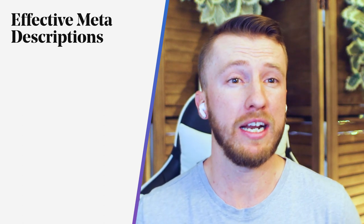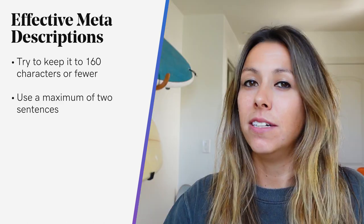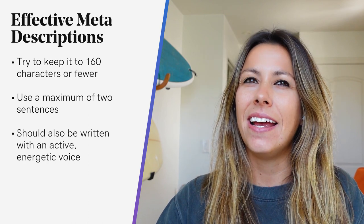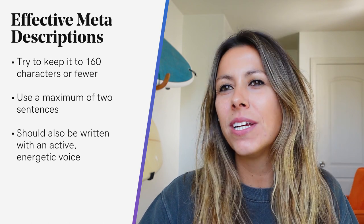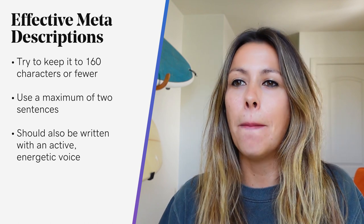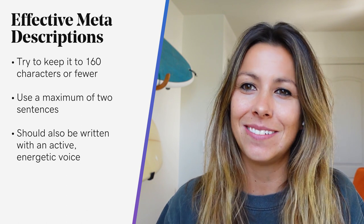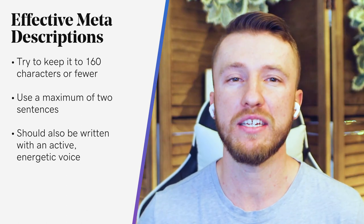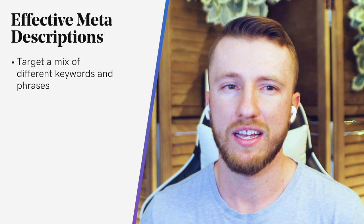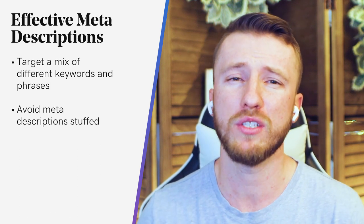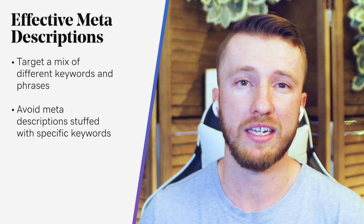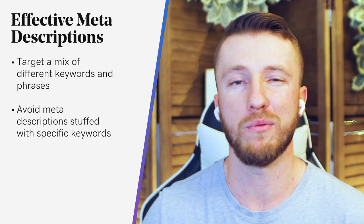Try to keep it to 160 characters or fewer and use a maximum of two sentences. Now let's talk about meta description tone. This should be written with an active and energetic voice. A blunt, straightforward description of the content on your page might help crawlers understand what your page is about, but it isn't going to motivate any clicks. Moving on to target keywords and phrases — ideally your page will target a mix of different keywords and phrases so you'll have diversity of different competitive ranking opportunities. However, you'll want to avoid meta descriptions that are just stuffed with specific keywords, as it reads unnaturally and will appear spammy and not really relevant to visitors' searches.